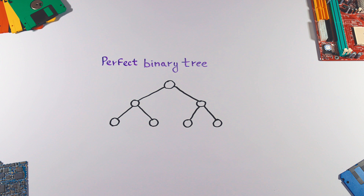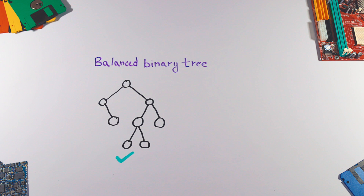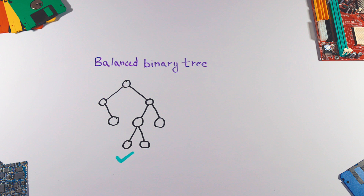A perfect binary tree is a tree in which all interior nodes have two children and all leaves are at the same level. When using binary trees, we try to keep them balanced to have better performance. A balanced binary tree is a tree where the maximum height of any branch is no more than one more than the minimum height of any branch.